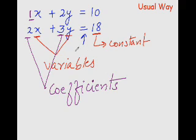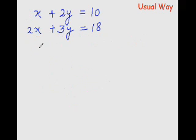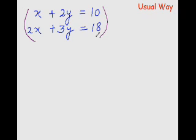There are a couple of ways for solving simultaneous equations, like the elimination method and substitution method. I would be using the elimination method. In the elimination method, all we try to do is eliminate one variable out of the two — x and y — so one variable gets eliminated by making the coefficients equal. Basically, we cross-multiply the coefficients.